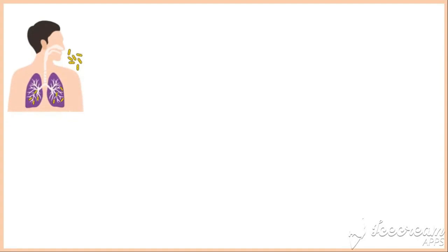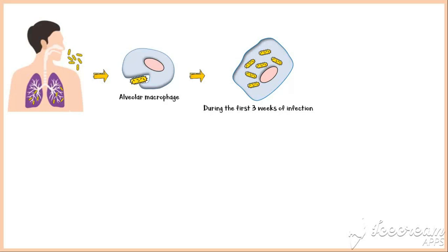Mycobacterium tuberculosis enters the lungs through inhaled air and is engulfed by the alveolar macrophages. As already mentioned, Mycobacterium tuberculosis has the ability to survive within the macrophages, where they multiply during the first three weeks of infection. They then spread to other parts of the body via lymphatics and bloodstream. At this point, most people are asymptomatic or they have a mild flu-like illness.